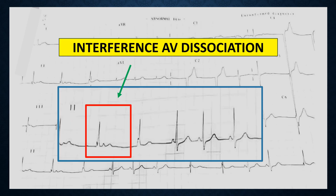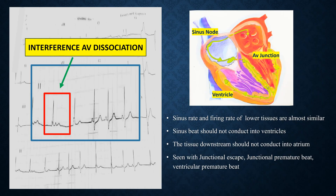Combining all this, what is the result of this presentation? This is called interference AV dissociation. As the name suggests, it is the interference between two things. In this case, there was no correlation between these two complexes and the P wave.